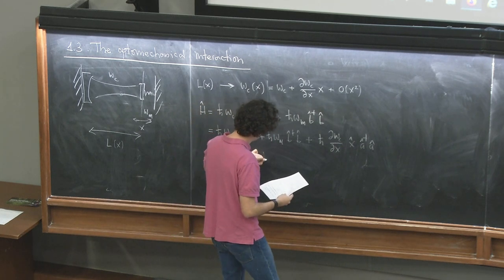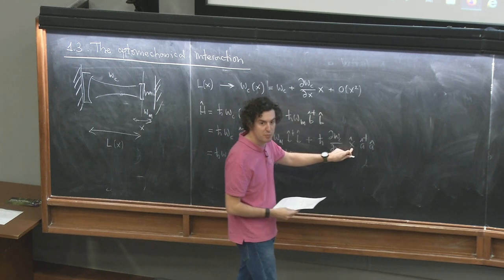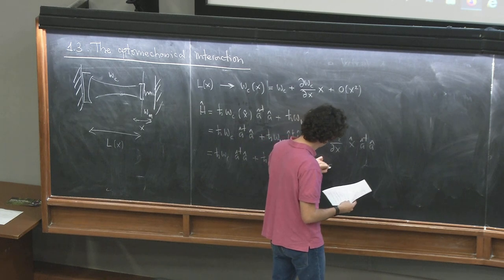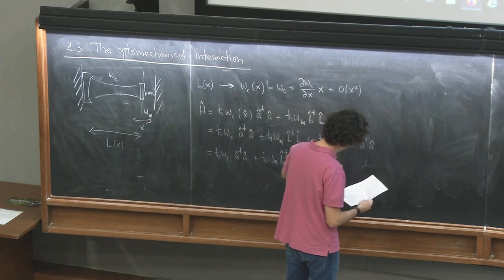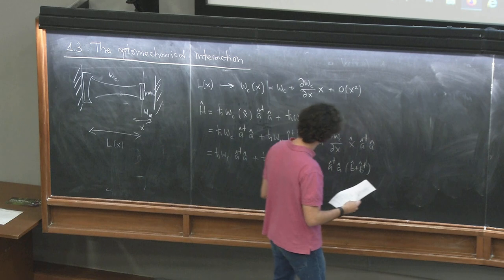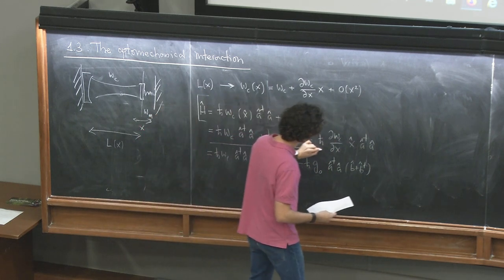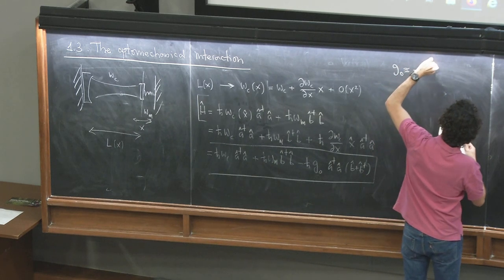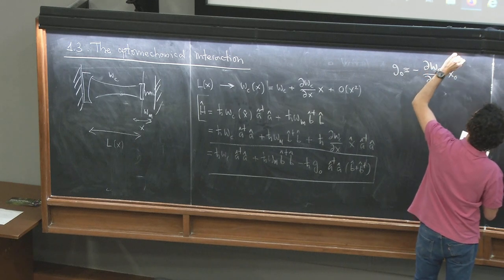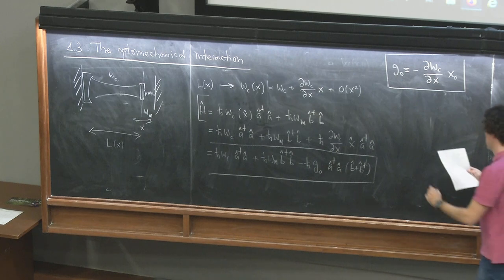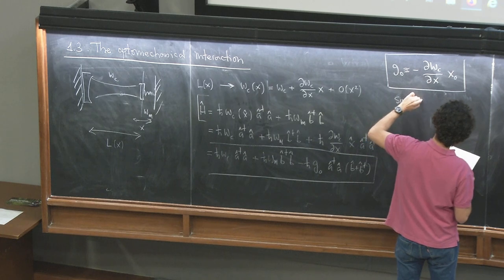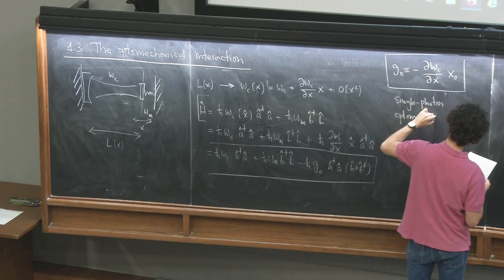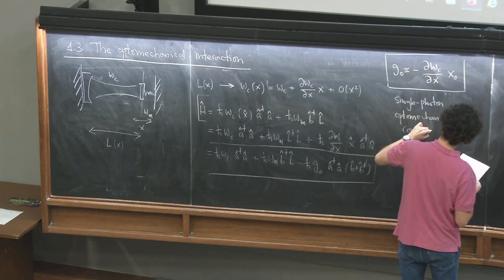We write X in terms of b + b†. The constant in front is defined as −ℏg₀. This is the famous optomechanical Hamiltonian, where g₀ is a frequency defined accordingly. This is the so-called single-photon optomechanical coupling — the fundamental optomechanical Hamiltonian that models the dynamics of two modes, the electromagnetic field mode and the mechanical mode, coupled by this interaction term.